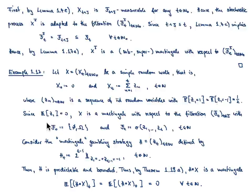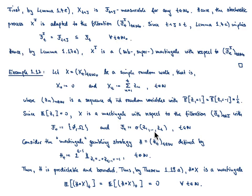The expectation of Z_1 is 1/2 · 1 + 1/2 · (−1) = 0. Hence this simple random walk is a martingale with respect to the natural filtration given by these random variables, where F_0 is the trivial sigma-algebra and F_t is the sigma-algebra generated by Z_1, …, Z_t.